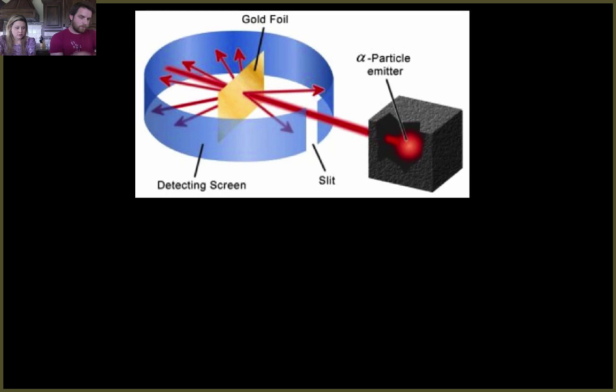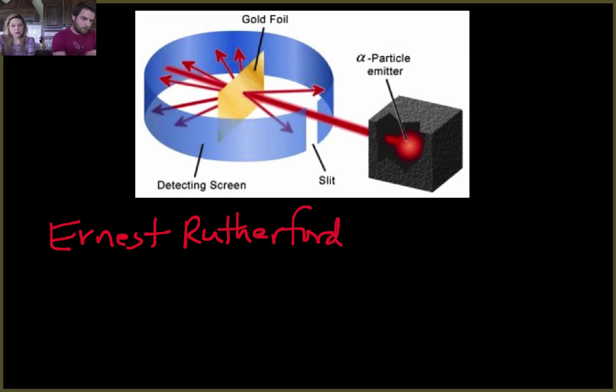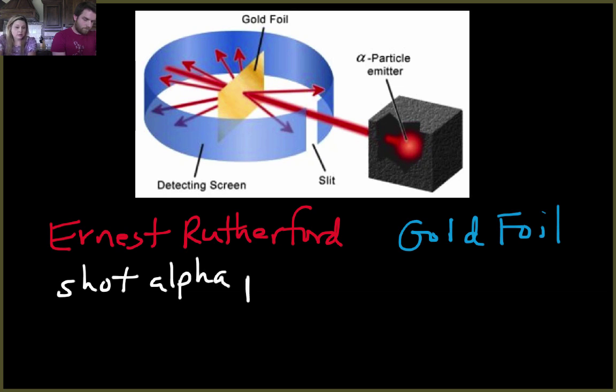Next person we're going to talk about is Ernest Rutherford. Rutherford took Thompson's model and did an experiment to prove it or disprove it. He used alpha particles, which are positively charged particles, and shot them at a sheet of gold foil. These were all gold atoms. A lot of them passed straight through, and some were deflected back.